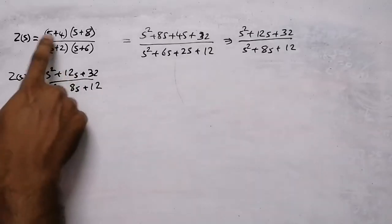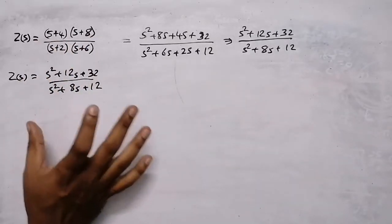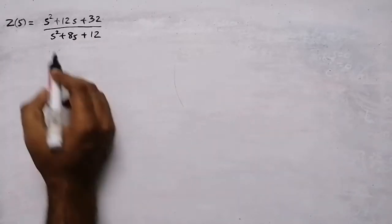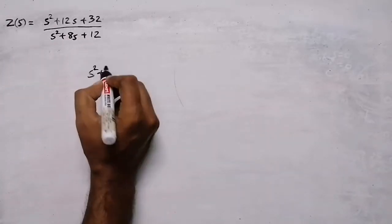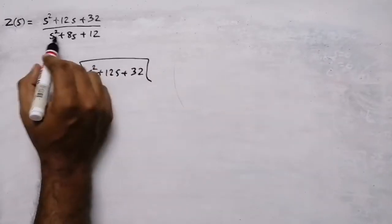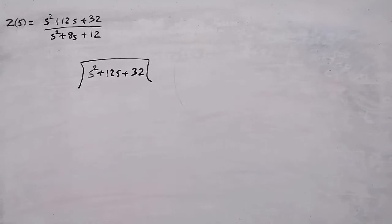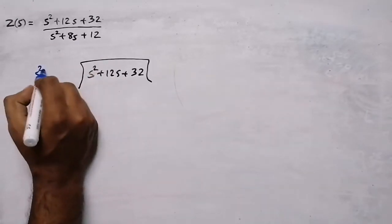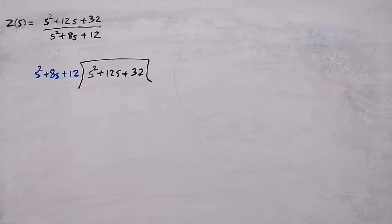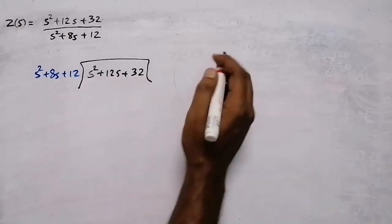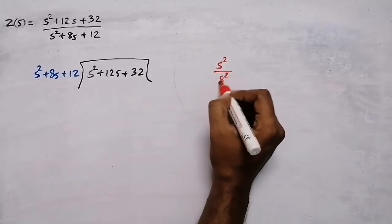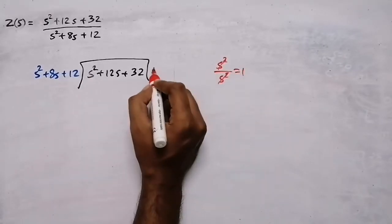After getting the impedance in this format, we perform long division. Take the numerator s² + 12s + 32, divided by the denominator s² + 8s + 12. Take the first terms: s² divided by s² equals 1. So the first quotient term is 1. Multiplying: 1×(s² + 8s + 12) = s² + 8s + 12. Subtracting: s² − s² = 0, 12s − 8s = 4s, 32 − 12 = 20. Remainder is 4s + 20.